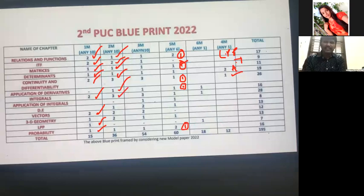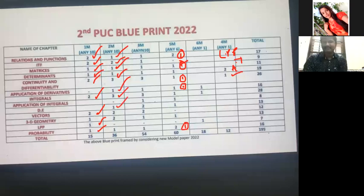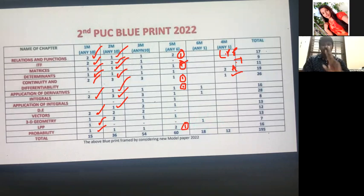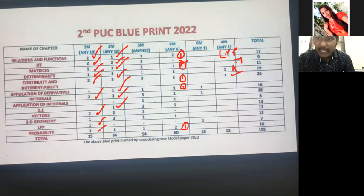For Differential Equations two-mark questions: order and degree — you know that very well. For Vector Algebra two-mark questions: (x̄ − ā)·(x̄ + ā) type question, or find the magnitude of ā, or area of parallelogram — compulsory. Two questions from Vector Algebra are compulsory. That makes ten two-mark questions completed.